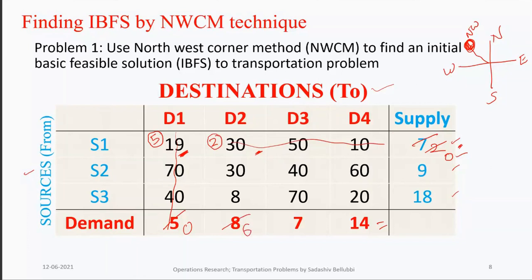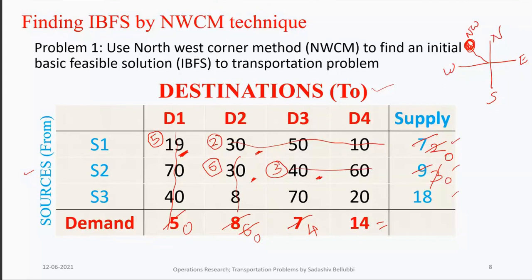The next northwest corner has supply 6 and demand 6, so we allocate 6 and cancel that column. Moving on, the next northwest corner has supply 3 and demand 7, so we allocate 3, leaving demand of 4. Finally, with only one row remaining, supply is 18 and total remaining demand is 4 + 14, so we allocate accordingly to satisfy all supply and demand.